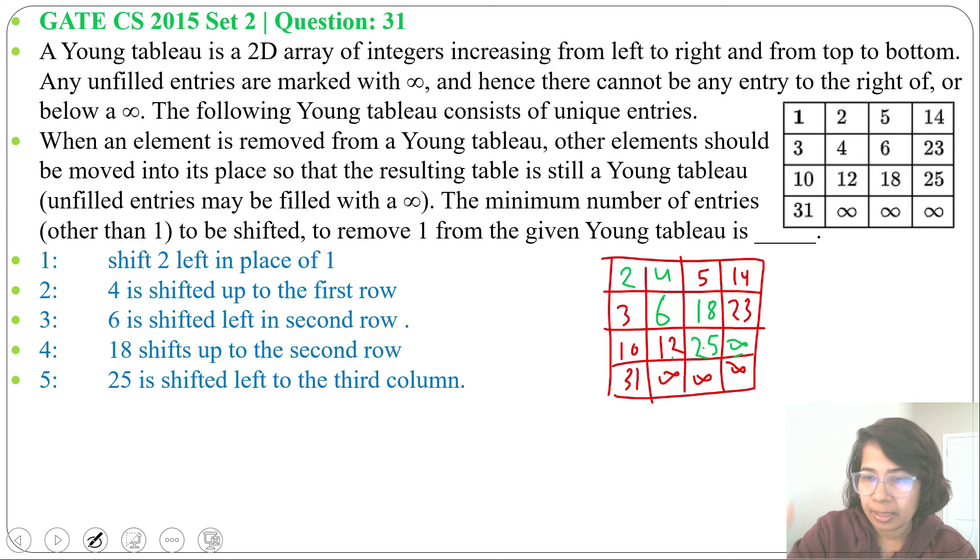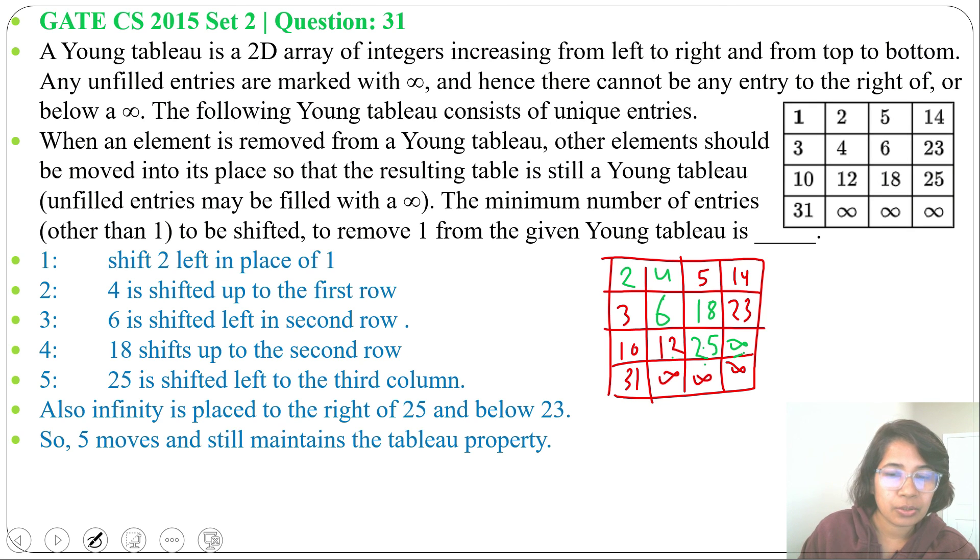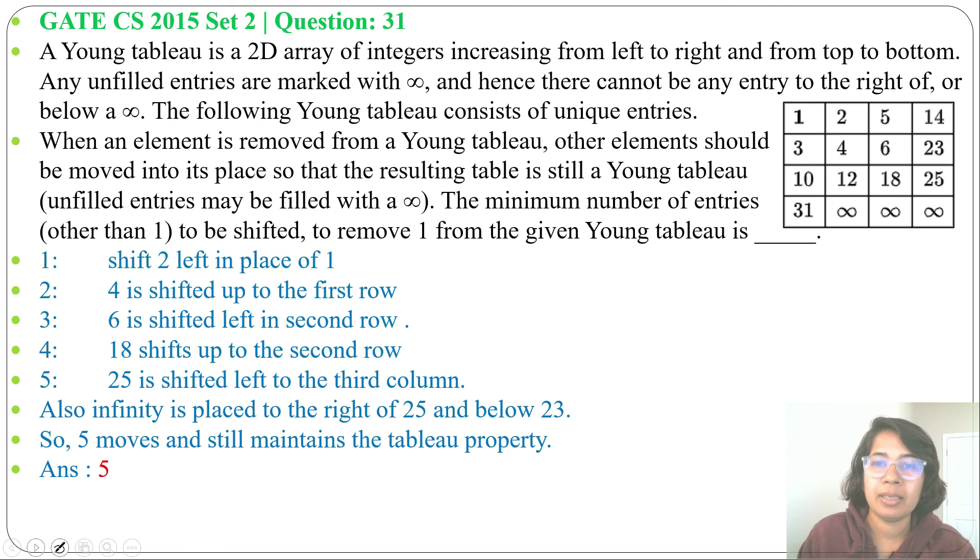3, 6, 18, 23 is increasing. 10, 12, 25, infinity, infinity, infinity is increasing. Even top to bottom it's also in increasing sequence, so still it's a Young tableau. So how many shifts did we do? We shifted 2, we shifted 4, 6, 18, 25. We did a total of 5 shifts, so the answer will be 5. If this lecture is helpful for you, please like, share and subscribe. Thank you.